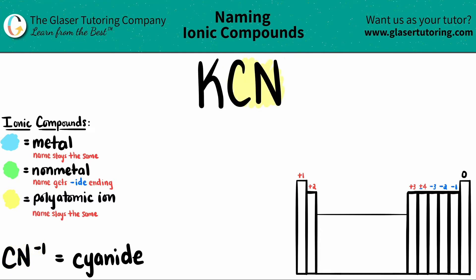And since it's an ionic compound, the K is a metal. Ionic compounds should have a metal in there unless it's two polyatomics. And we know that it's a metal because potassium is over here. Now all we got to do is just name them. The metal name always stays the same. So since it's K, it's just potassium.